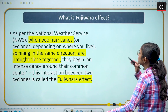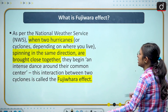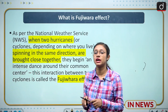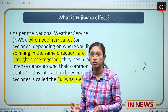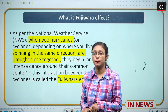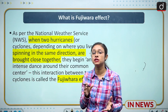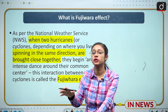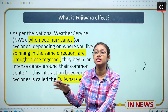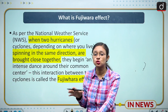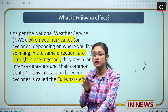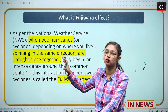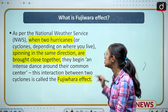The next slide is about the Fujiwara effect. We have already discussed that it is associated with cyclones. What happens is that when two cyclones swing in the same direction, meet at a common point, and have an intense dance-like interaction — this effect is called the Fujiwara effect.